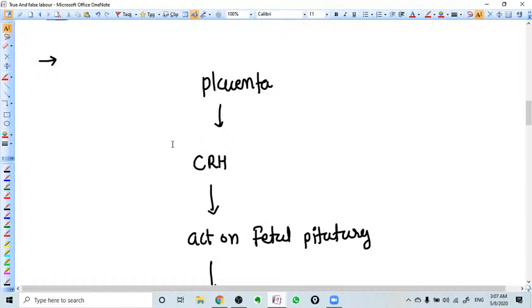When the pregnancy achieves term, the placenta starts decreasing CRH. CRH is the hormone.